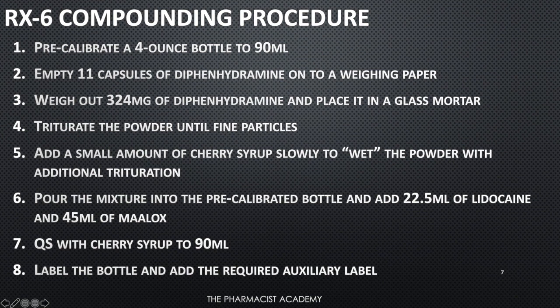Here is the compounding procedure for RX number six. You want to empty the Benadryl capsules onto a weighing paper, get the amount needed, triturate it, and then add a small amount of cherry syrup to wet the powder. Pour this mixture into the precalibrated bottle, then add the other ingredients — the lidocaine and the Maalox — and QS with cherry syrup to 90 ml.